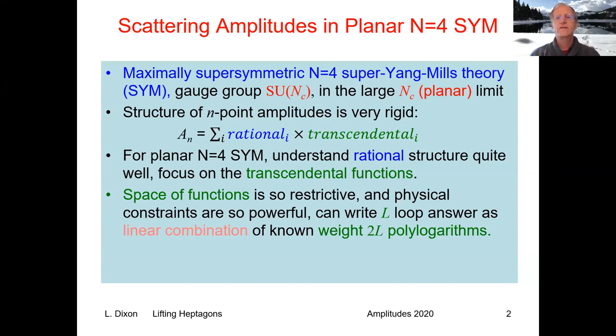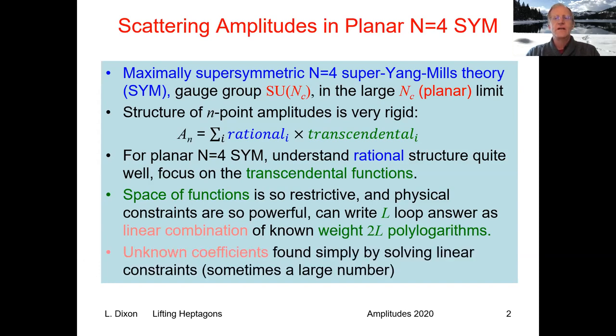We've learned that in simple cases the space of functions is so restrictive and the physical constraints are so powerful that we can simply write down the answer at loop order L as a linear combination of known functions which are polylogarithms or iterated integrals where the number of integrals is 2L. The unknown coefficients can be determined simply by applying boundary conditions and solving some linear constraints. At high loop order there might be a large number of linear constraints but it's just linear algebra.